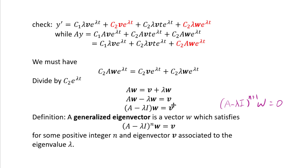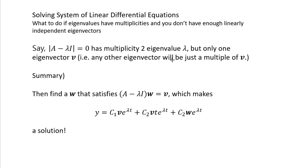So w is a generalized eigenvector, and having one gives you a way to make both sides of y prime equals A·y equal. To summarize: if you have a multiplicity 2 eigenvalue lambda but only one eigenvector, write the second solution as v·t·e^(lambda·t) plus w·e^(lambda·t), where w satisfies (A minus lambda·I)·w equals v. That combination is a valid solution. This may be abstract, so let's work through an explicit example.